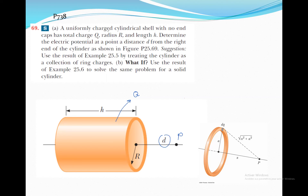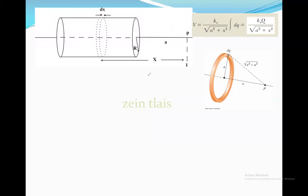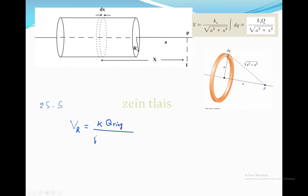Let me explain the problem. In Example 25.5, we calculated the electric potential for a ring at point P. In that example, the potential of a ring equals k times Q of the ring divided by the square root of a squared plus x squared.